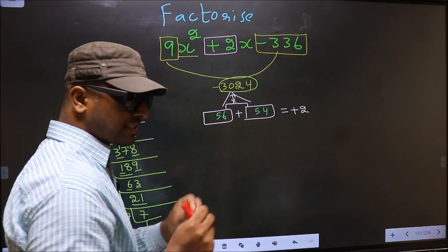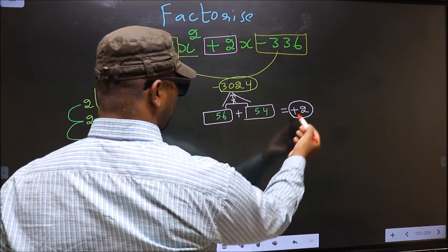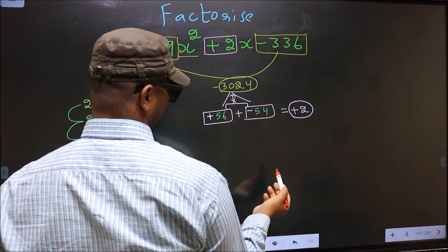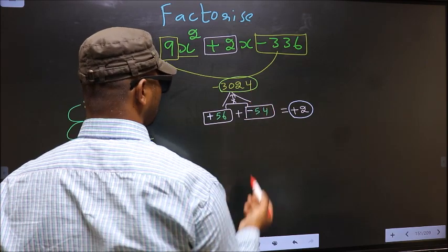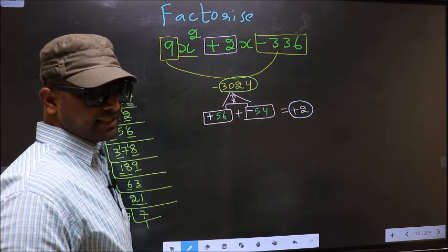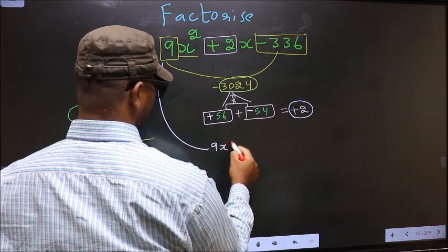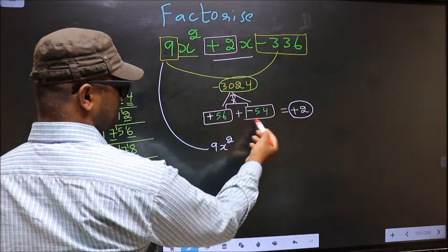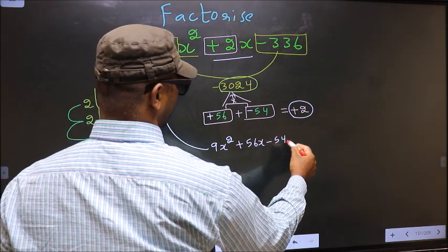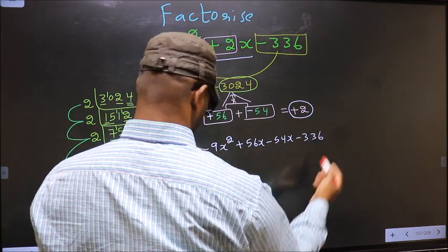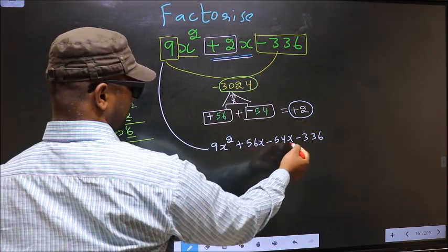Now we should adjust the signs. Over here we have +2. To get +2 we put plus here and minus here: +56 minus 54 = +2, and +56 × (−54) = −3024. So we have adjusted the signs. Now change 9x² + 2x − 336: in place of +2x we write +56x − 54x − 336.